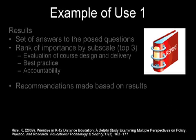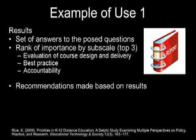The researchers now had a list of answers and subscales they could use for further research. The top three ranked subscales were: evaluation of course design and delivery, best practice, and accountability. They went ahead and created a recommendations section where the researchers made ideas based on the results — recommendations for the future priorities in K-12 distance education.